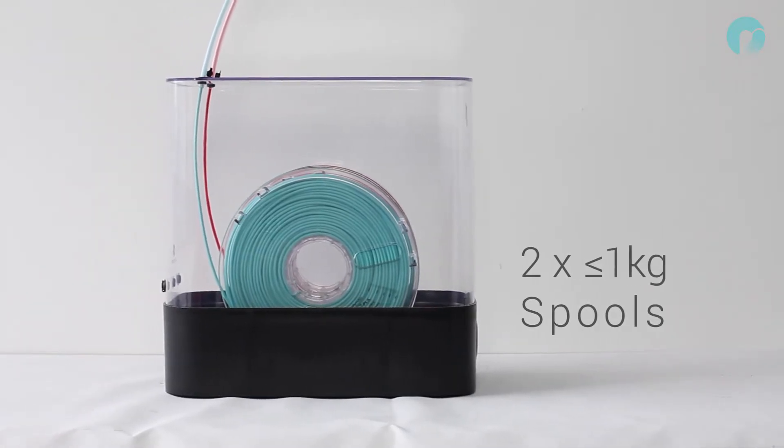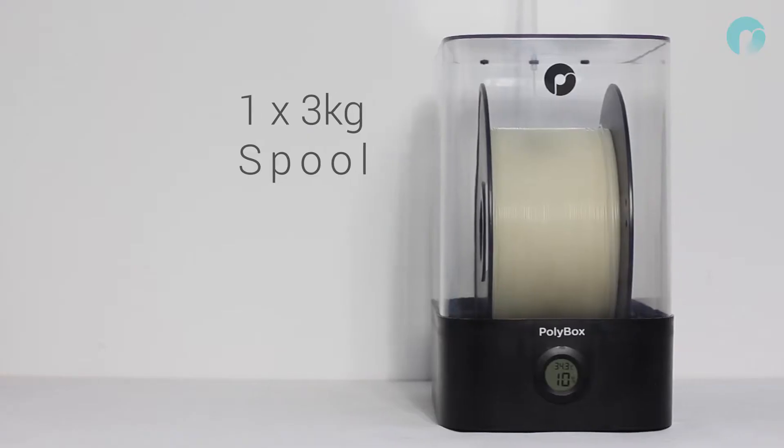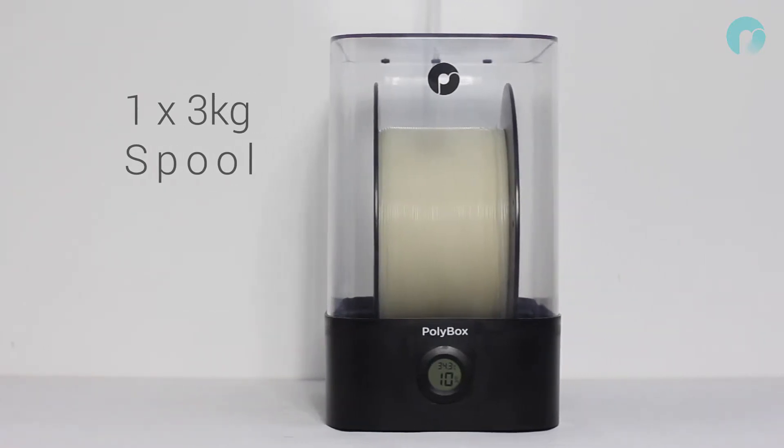Polybox can store two 1kg spools side by side or one 3kg spool for heavy or industrial users.